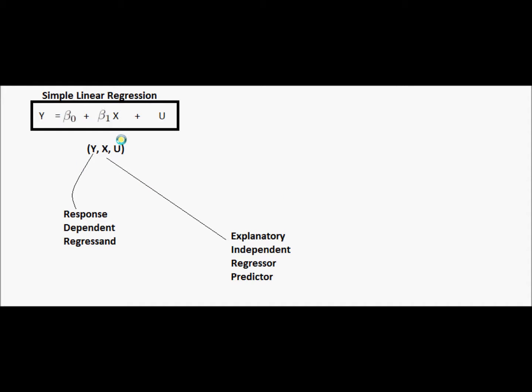Finally, this u random variable we call the error term. And so that's really what's in the background of our regression model.